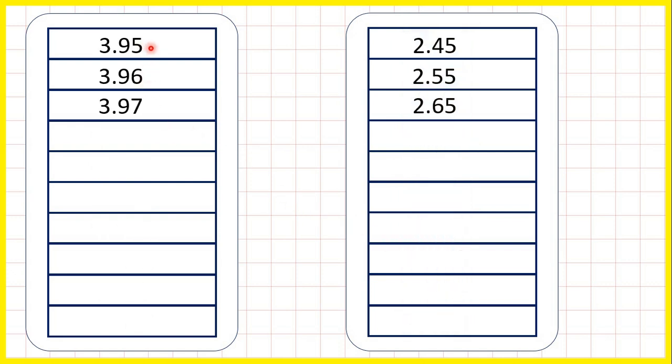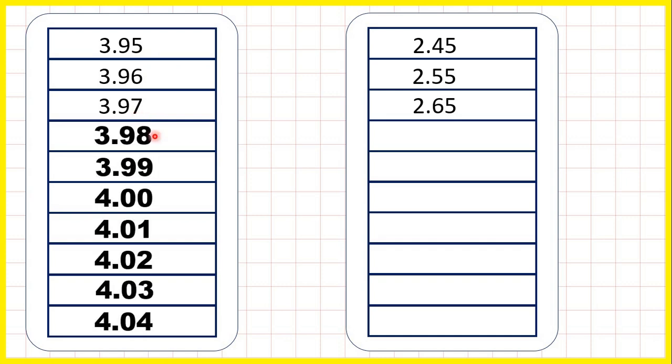3.95, 3.96, 3.97. So here, we're counting in hundredths, because it's the hundredths digit that's changing. So those are the next seven numbers in the sequence.